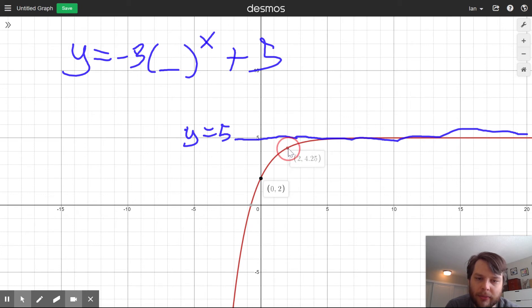Try to get it there. Oh, almost. 4.25. Well, that's 0.75 below. So what did we just notice?